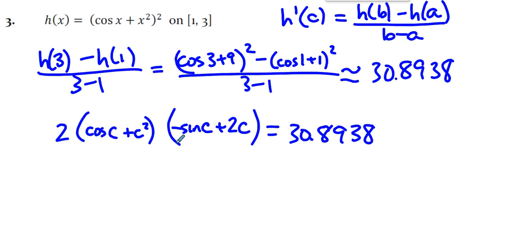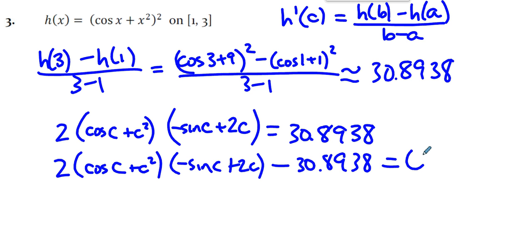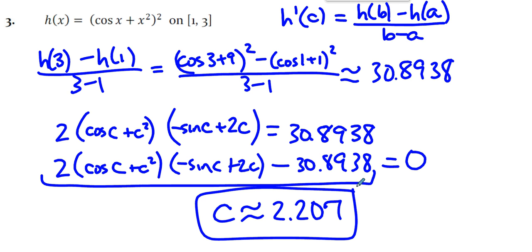So then this is a calculator problem. So you're taking this, if I'm advising, I think the way to do this is to get one side equal to 0, and then you graph this as y1 with x's in place of c's, and then you figure out where a root is, and that turns out to be at 2.207. So that's a calculator question.